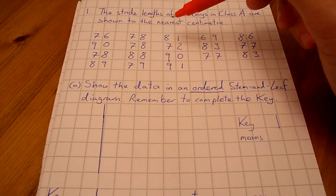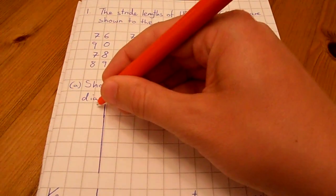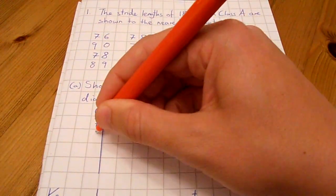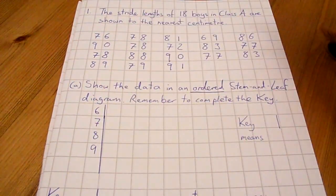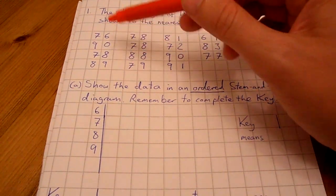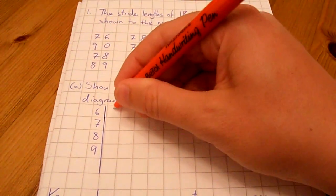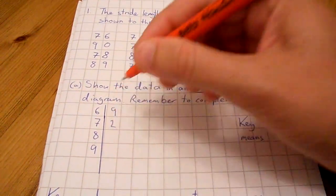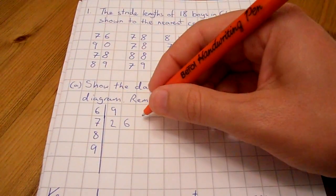The first thing is to look at which numbers we've got for our stems. We've got 6, 7, 8, and 9. From here on, we just need to account for all the leaves, or the units column. What we'll end up with is the following numbers for each of the stems.